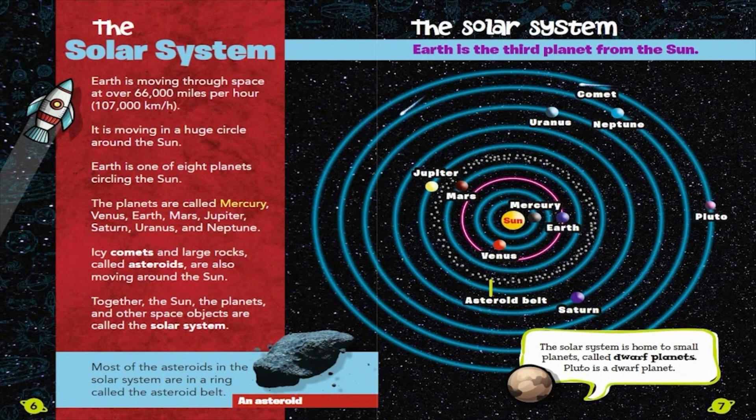Earth is one of eight planets circling the Sun. The planets are called Mercury, Venus, Earth, Mars, Jupiter, Saturn, Uranus, and Neptune.